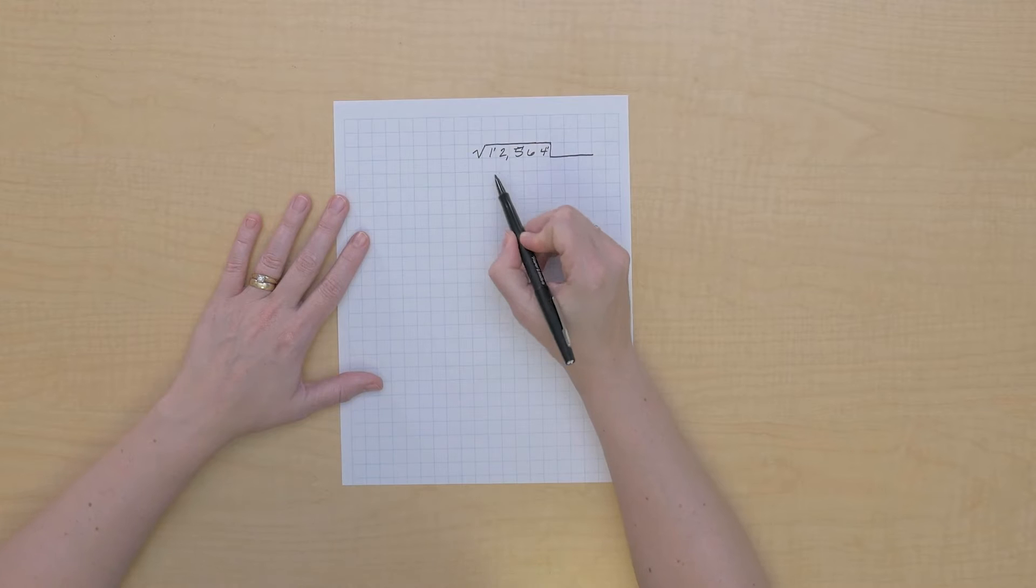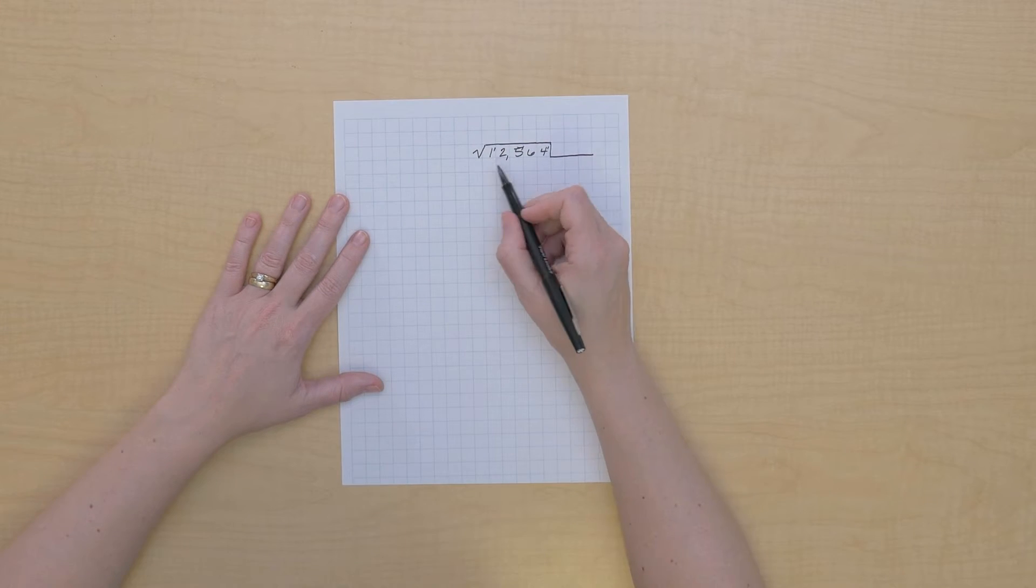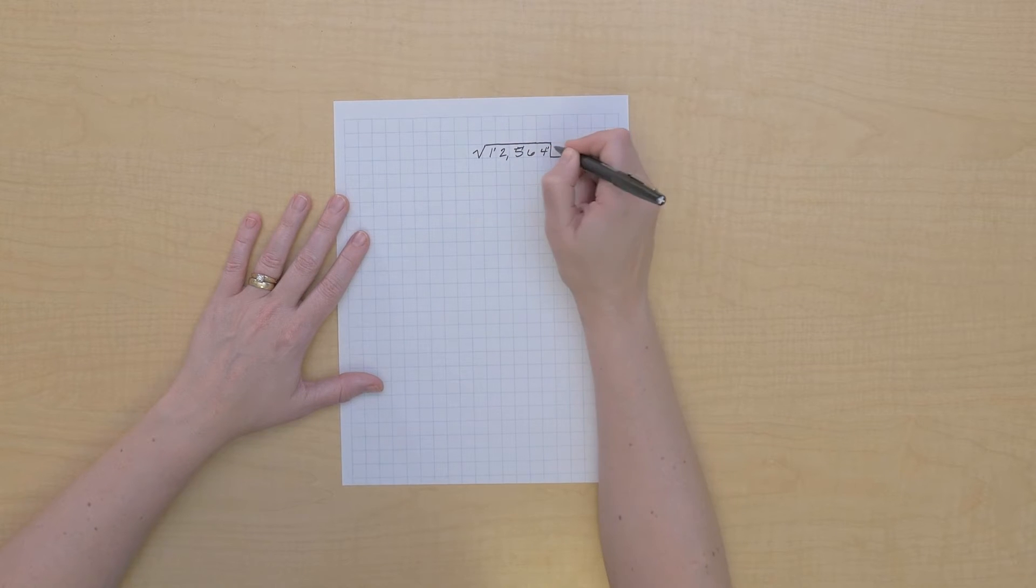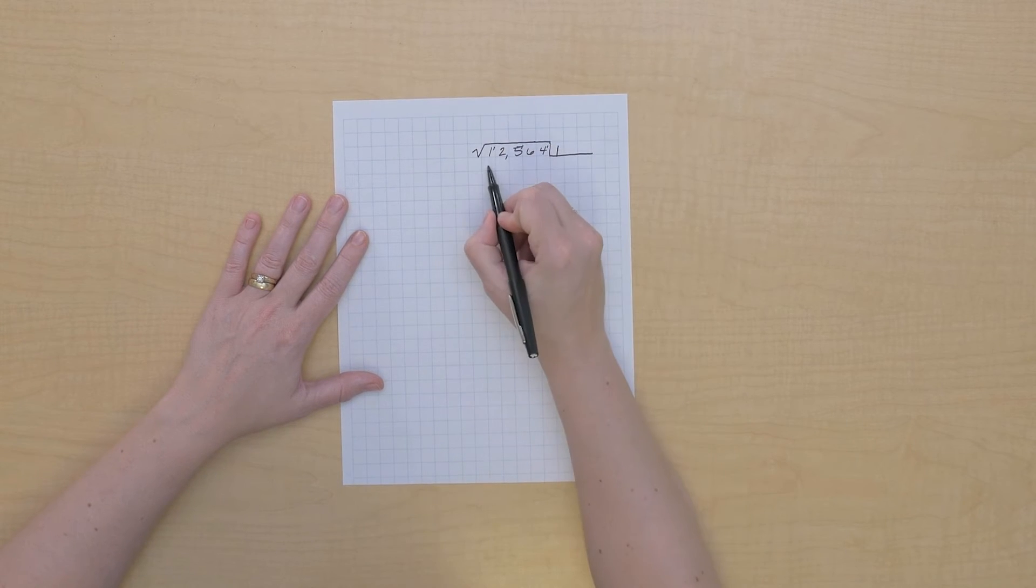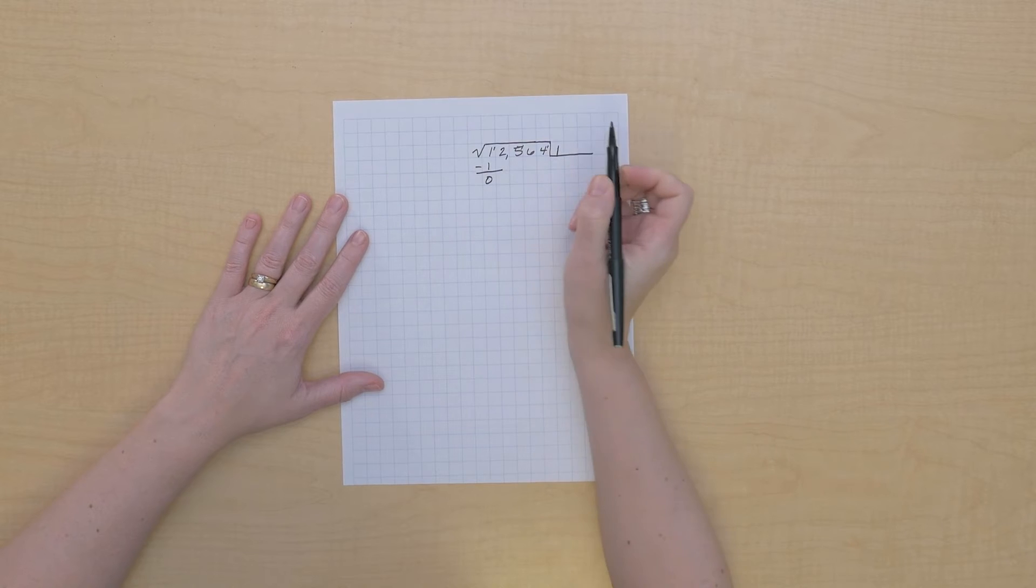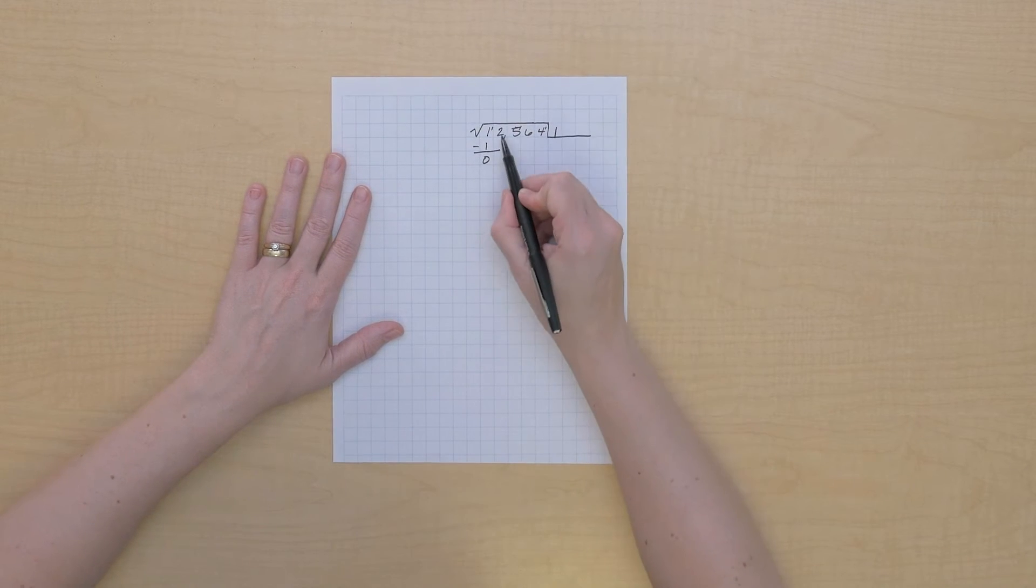Let's do a square root problem just on paper. So the first thing we do is mark off our periods. I can see we have a three-digit root. Okay, so first we'll look at this first period and think what's the biggest square I can make out of that, and it's going to be one. And one minus one is zero, so we have zero left. So we bring down our next period.